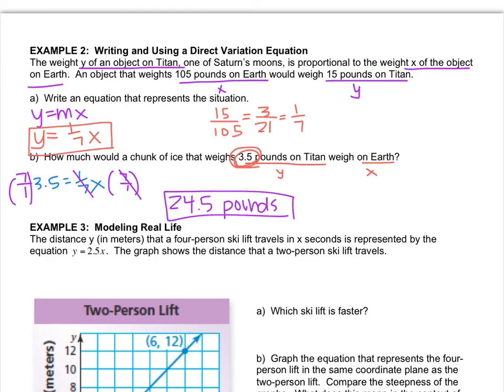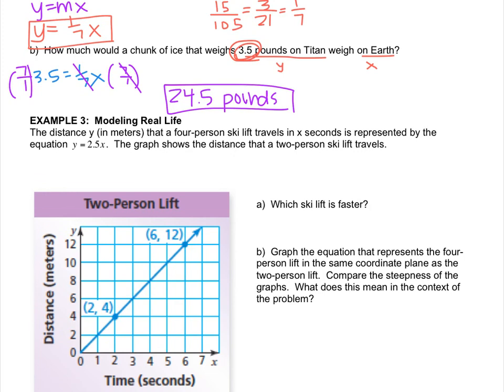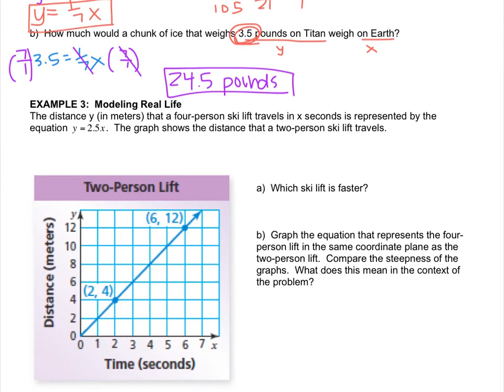Moving on to example three. The distance y in meters that a four-person ski lift travels in x seconds is represented by the equation y equals 2.5x. The graph shows the distance that a two-person ski lift travels. This graph actually represents the two-person ski lift, and they tell us a formula for the four-person ski lift.